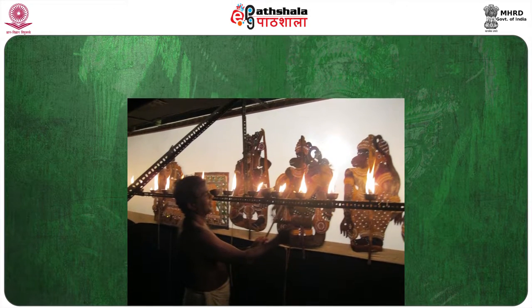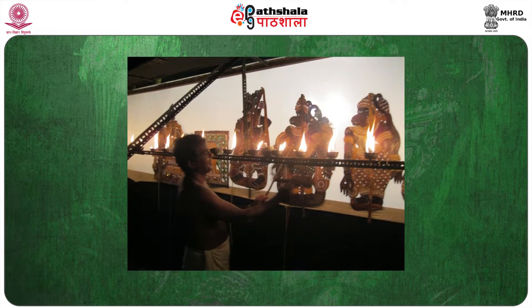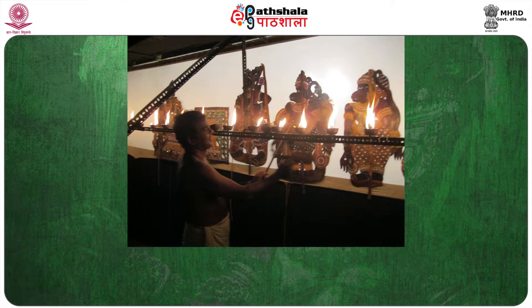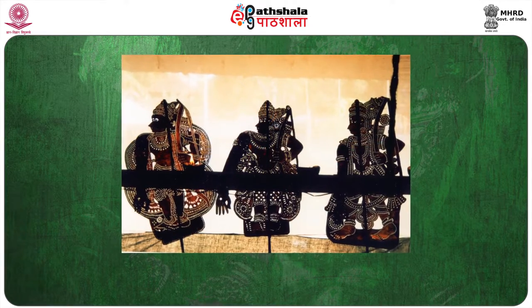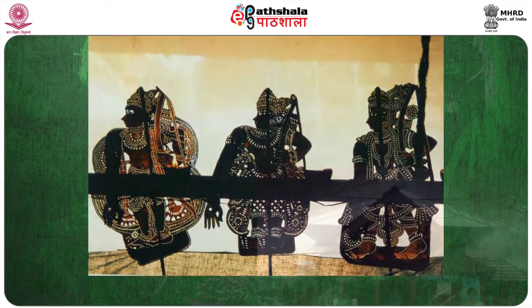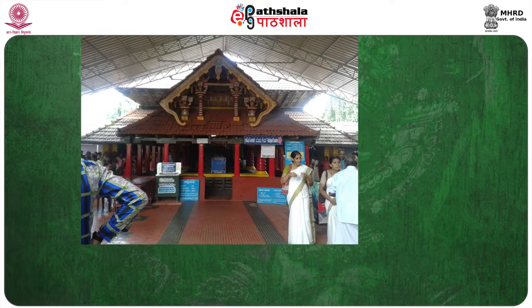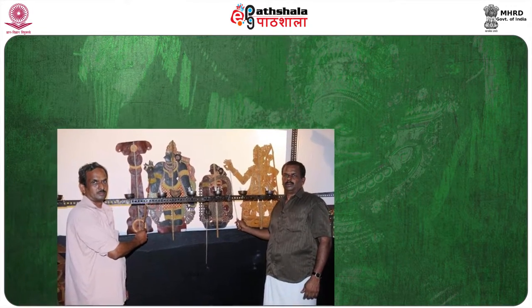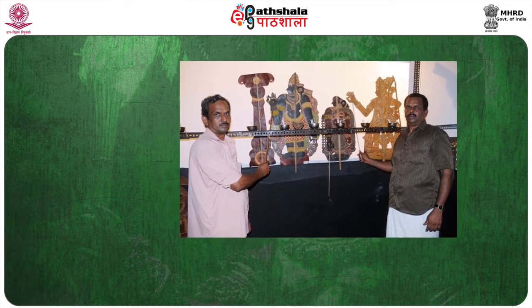Tol Pava Kuthu is a night-long performance, part of the temple festival season which starts from December and lasts till May. After the Ganesh Puja, the puppeteers for the whole night sing Kamba Ramayana verses in Tamil, Malayalam and Sanskrit. Every day the puppeteers narrate one story from the Ramayana. The puppets are manipulated and special effects are created by introducing more oil lamps behind the puppet. The performance is organized in every Bhadrakali temple in the districts of Palakkad and Thrissur. Tol Pava Kuthu forms an integral part of the annual festival dedicated to Goddess Devi, and long complicated rituals precede the actual play.